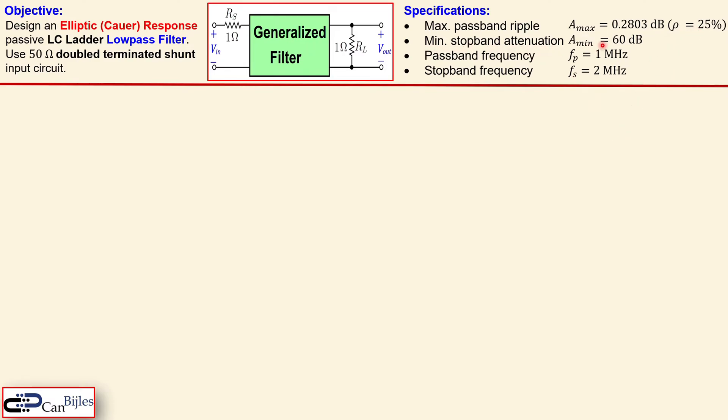The minimum stopband attenuation must be 60 dB, and we have a passband frequency of 1 MHz and the stopband frequency must be 2 MHz. So these are the specifications. This is actually similar to the example number one about the elliptic response. We have in this case a different passband ripple and also a higher required minimum stopband attenuation.